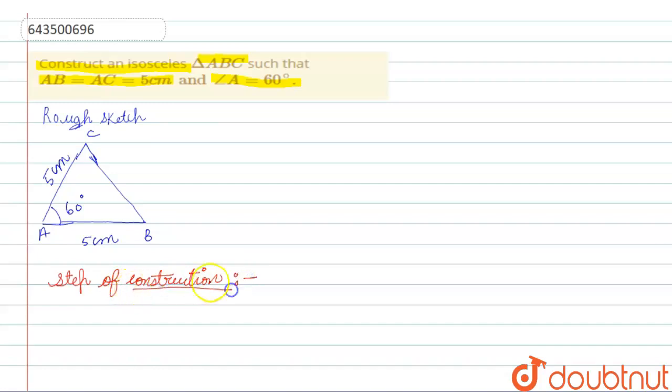Step number one: draw a line segment AB equal to 5 centimeters. So first of all, we will draw a line segment AB of 5 centimeters.